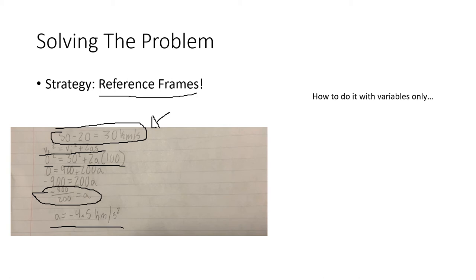This can also be done with straight variables, with VF squared equals VI squared plus 2AS. By manipulating this algebraically, we can do VF squared minus VI squared equals 2AS.